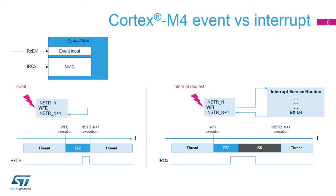The Cortex-M4 supports two ways to enter a low-power state: executing the wait-for-event (WFE) instruction or executing the wait-for-interrupt (WFI) instruction. With WFE, the first instruction executed after a wake-up event is the next sequential one — instruction n+1 in the sequence. By implementing WFI, the processor jumps to the interrupt service routine when an enabled interrupt request is received.